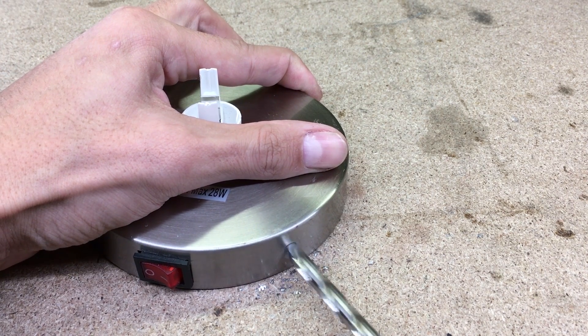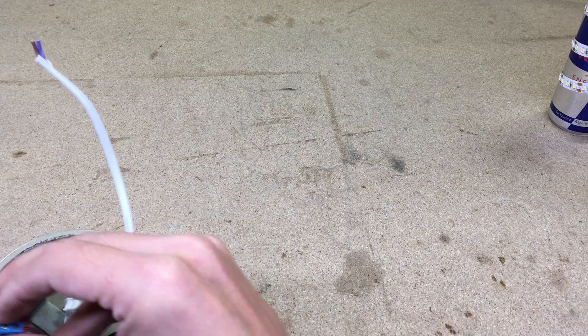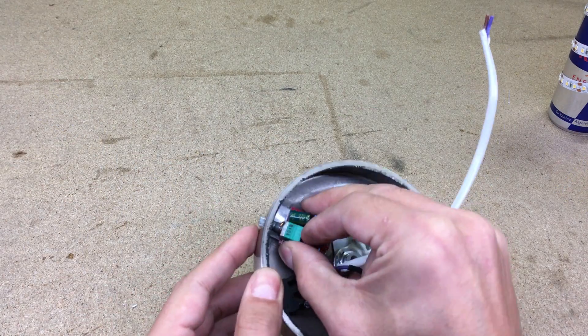Drill the hole in a lampstand and secure dimmer in place. Add a small piece of plastic to prevent any short circuit between lampstand and that circuit board.